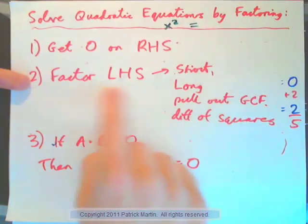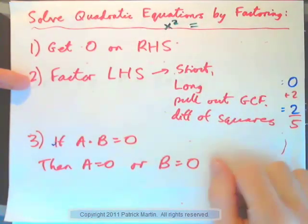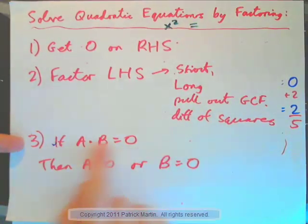Then factor the other side, usually the left-hand side, by some method. And then we use the zero product rule. If a times b is zero, a is zero or b is zero, right?